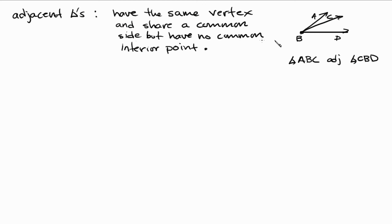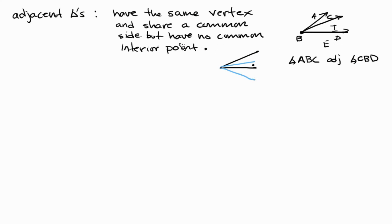As far as no common interior point, what that relates to is when you have two angles overlapping like this — these are not adjacent angles, because they share a common interior point. Here's the interior of the angle and here's the exterior. The only thing you need to remember about adjacent angles is that they share a common side. Now the next angle we're going to talk about is called complementary angles.